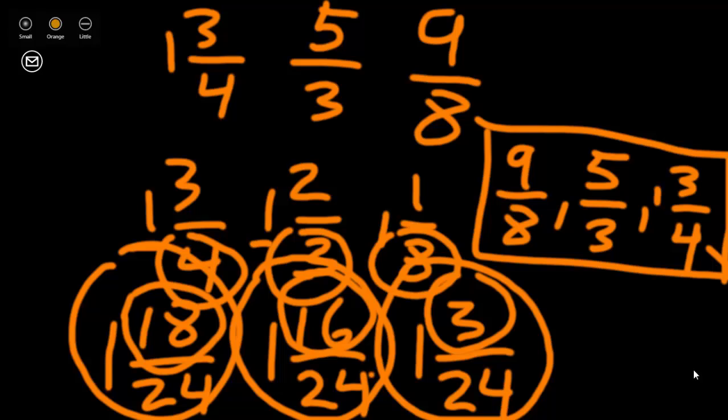Remember: if you're listing fractions in order, it first helps to have all of the fractions listed as mixed numbers if they are written as improper fractions. Also, use the common denominator strategy and change all of your denominators to the same denominator — that way, you're only looking at the numerators while comparing.